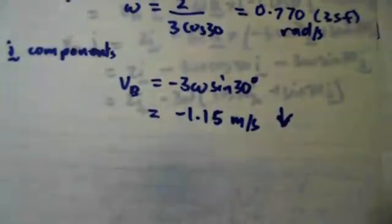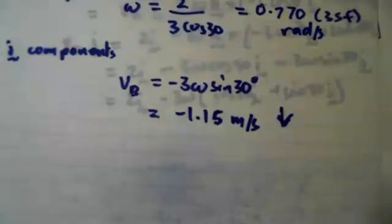That's all that you need to do for this question, because it's only asking you for the velocity of end B for 30 degrees, or for theta equals 30 degrees. Thanks for watching.